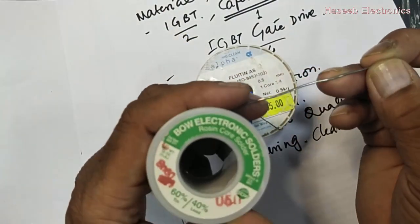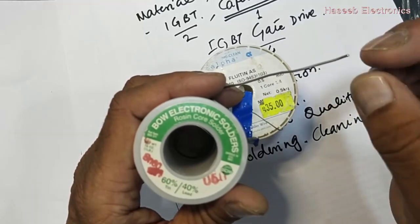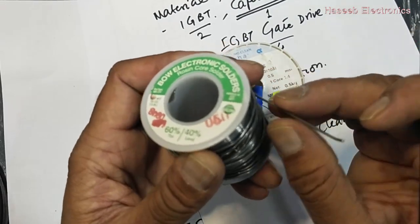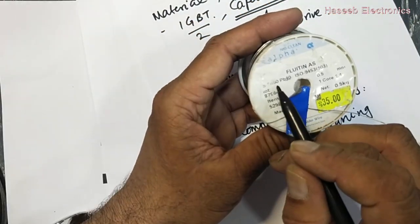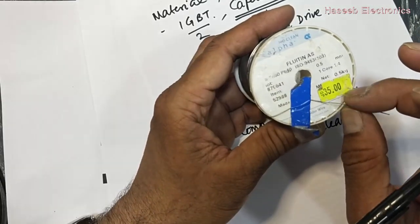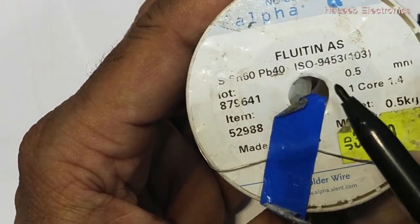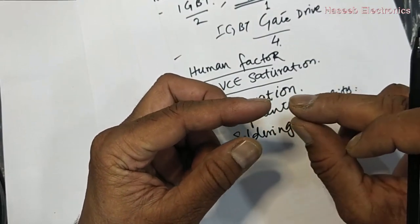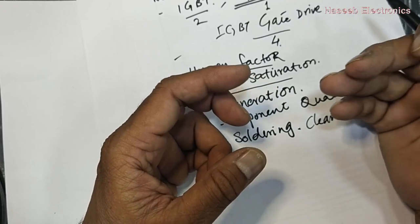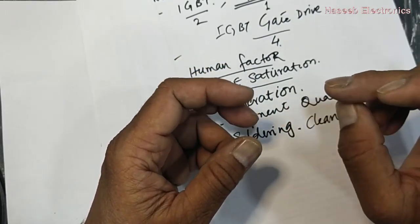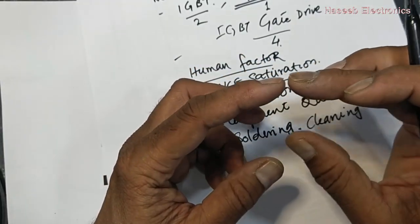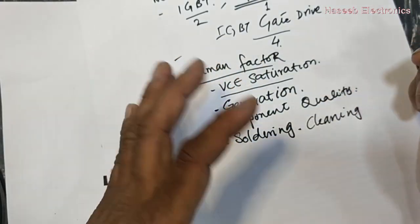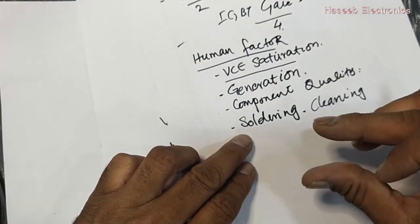We must use a best-quality solder wire — like 60/40 rosin-core solder. This solder wire is 60% tin and 40% lead, and inside the pipe-shaped solder wire there is rosin flux, so we don't need external flux. Always use good-quality 60/40 flux-filled solder wire. When we solder the replacement component, we must also clean the contacts thoroughly. If we don't clean the contacts, the existing solder flux and other oxides will remain in the PCB hole, increasing contact resistance and causing slow conduction of the IGBT.